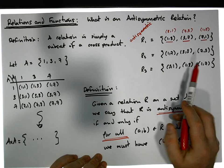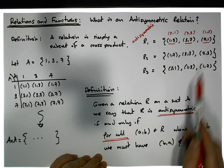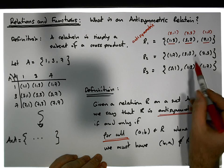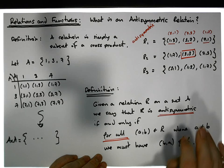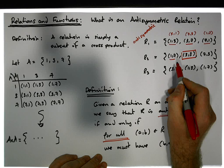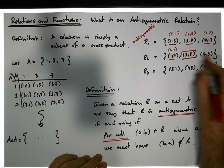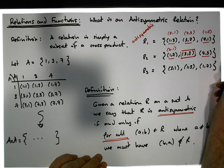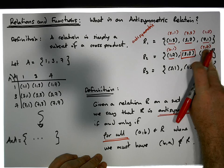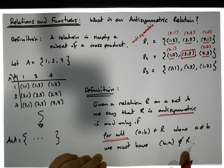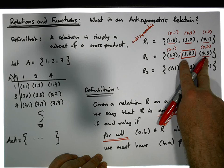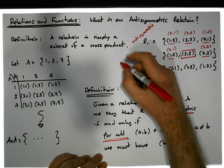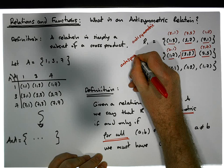Now let's check OR2 = {(1,7), (3,3), (7,3)}. We ignore (3,3) since a equals b there, leaving two pairs to test. Flip (1,7) → (7,1): not in OR2 — good. Flip (7,3) → (3,7): not in OR2 — good. For both applicable cases, none of their flips are in OR2, so OR2 is also anti-symmetric.